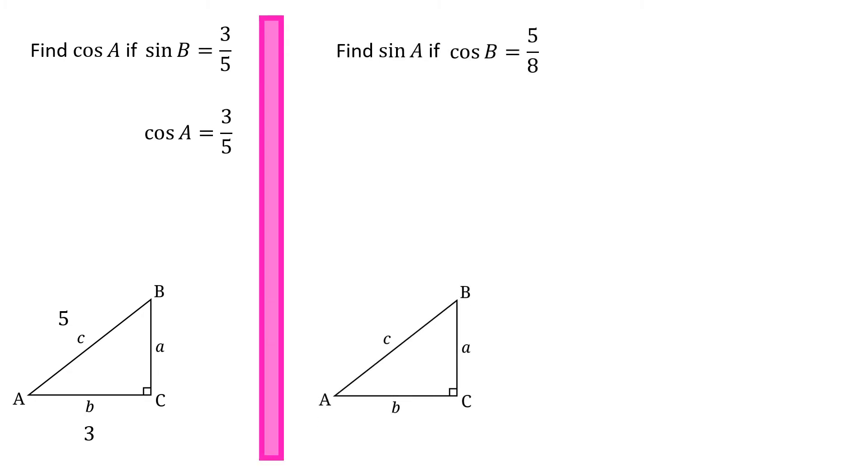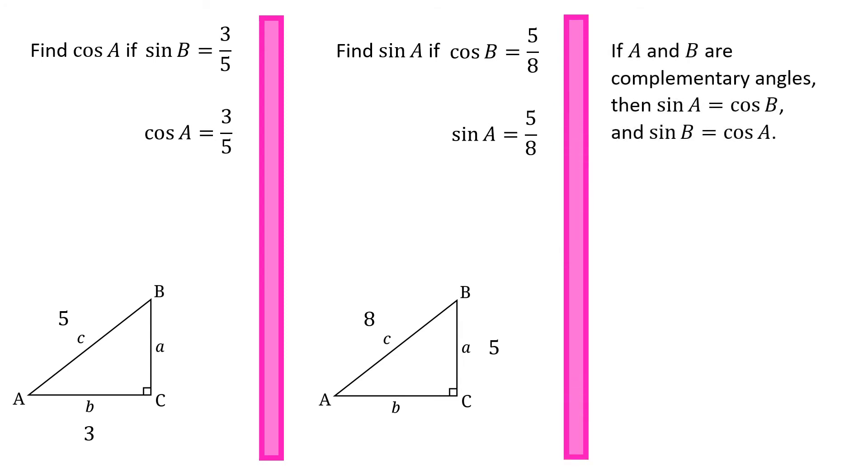Find sine of A if cosine of B equals 5 eighths. Okay, now cosine is adjacent over hypotenuse. So the side adjacent to angle B has to be 5. Hypotenuse has to be 8. And if I want the sine of A, I've got to go to angle A and look for the side that is opposite. And opposite A would be 5. Hypotenuse is 8. Hey, look at that. Once again, we got an identical answer. So if A and B are complementary angles, oh, this is the hook. This is why we're going back to that. If A and B are complementary angles, then sine of A equals cosine of B, and sine of B equals cosine of A.